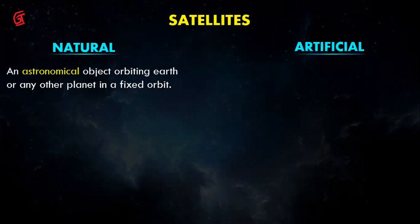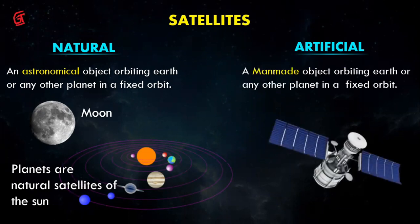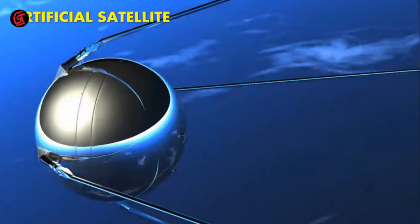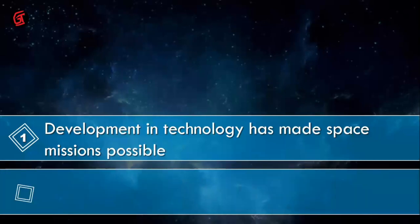There are two types of satellites — natural and artificial. A natural satellite is an astronomical object like the moon. An artificial satellite is a man-made object placed with human effort. The first artificial satellite was Sputnik, launched by Russia (the Soviet Union) in 1957.